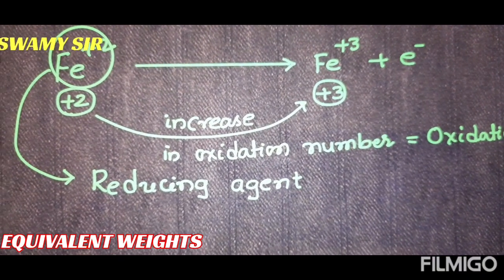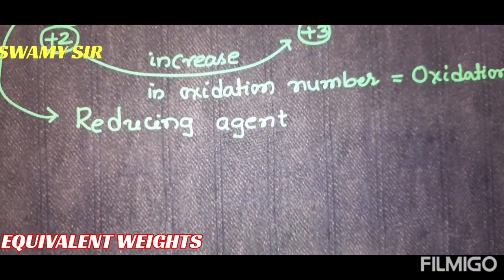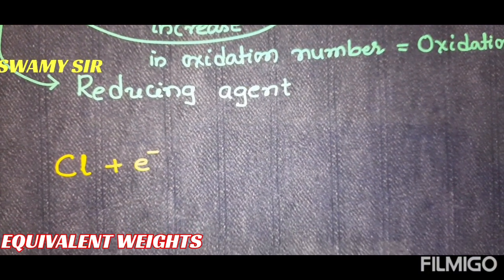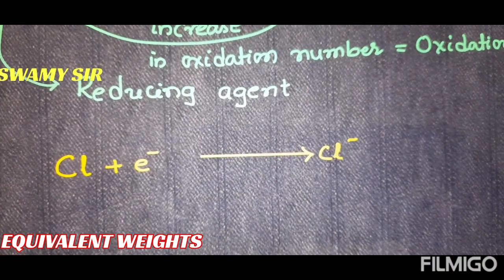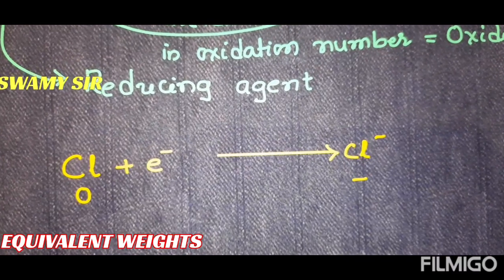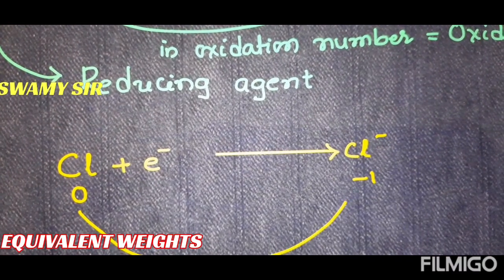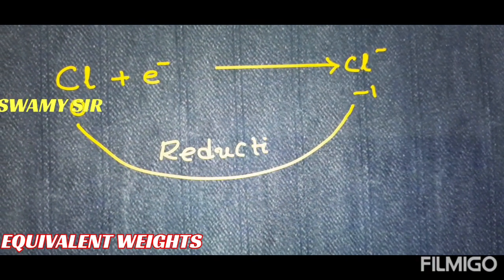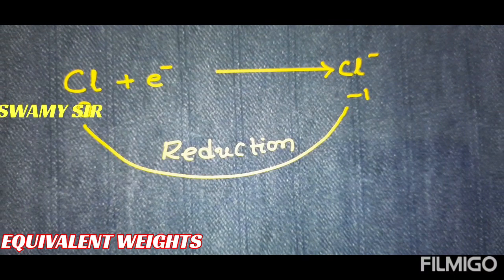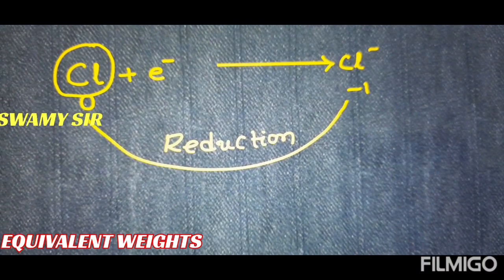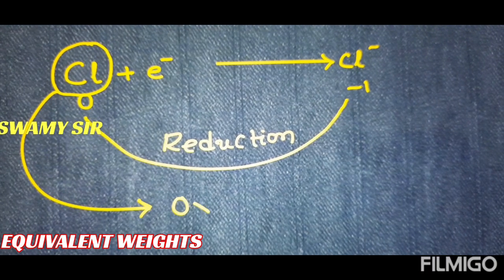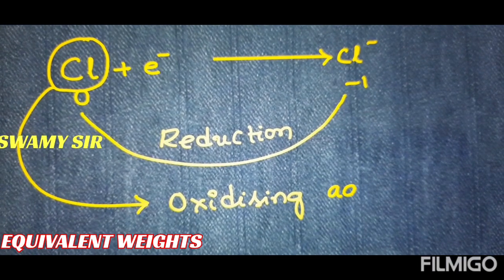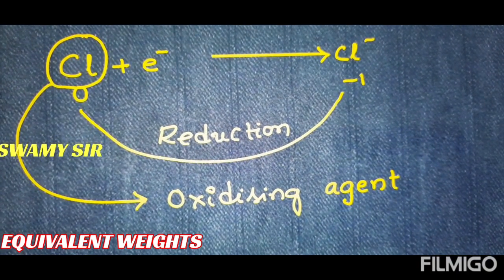I will take one more example. Cl accepts one electron and changes to Cl⁻. Here, Cl has an oxidation state of 0, and the product has an oxidation state of -1. So 0 changes to -1, which indicates a decrease in oxidation state. A decrease in oxidation number in a given reaction is called reduction. The species which undergoes reduction is called the oxidizing agent. In these two examples, students are now familiar with oxidizing agent and reducing agent.